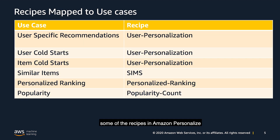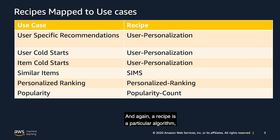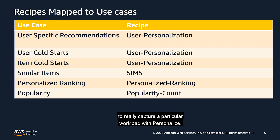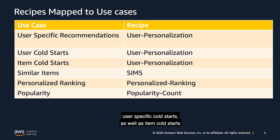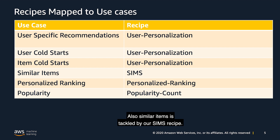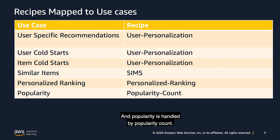It's a good time to map the recipes in Amazon Personalize to those use cases. A recipe is a particular algorithm plus additional configurations that capture a particular workload. User-specific recommendations and user cold starts as well as item cold starts are best solved by the User Personalization recipe. Similar items is tackled by the SIMS recipe. Personalized ranking is tackled by the Personalized Ranking recipe. And popularity is handled by Popularity Count.